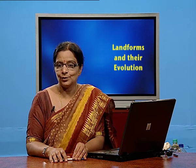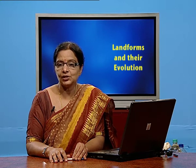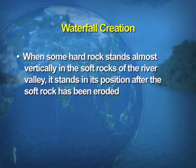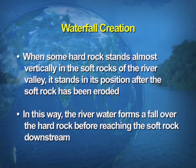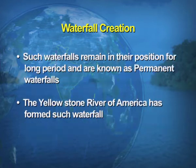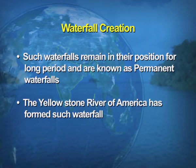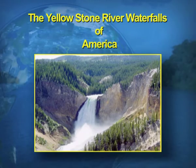There are also certain permanent waterfalls. In this type, the hard rocks stand almost vertically in the soft rocks of the river valley. The river water forms a fall over the hard rock before it reaches the soft rock downstream. Such waterfalls remain in their position for a long period and are known as permanent waterfalls. The best example is the Yellowstone River of America.